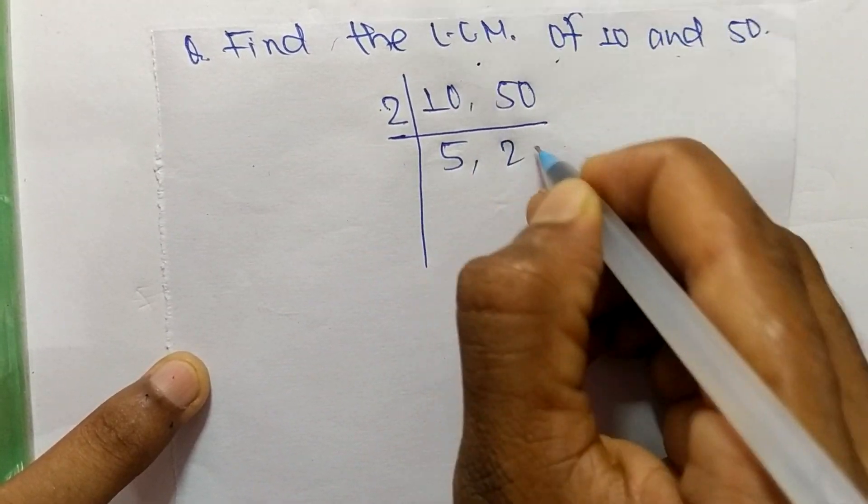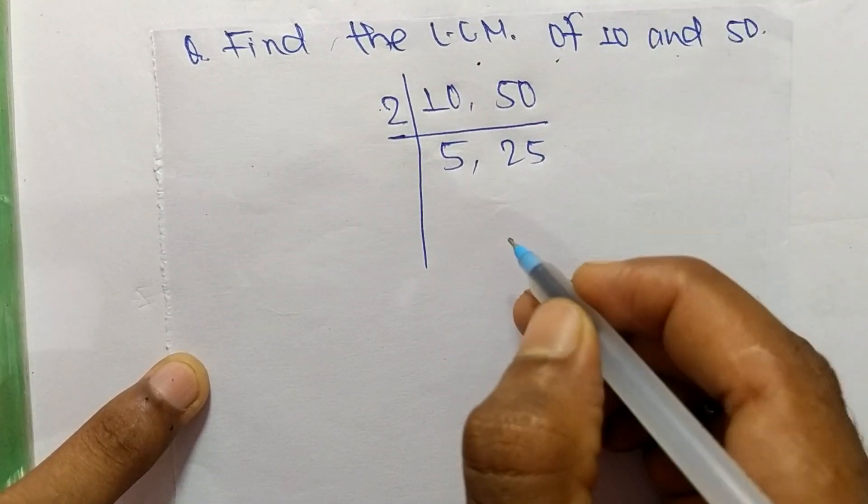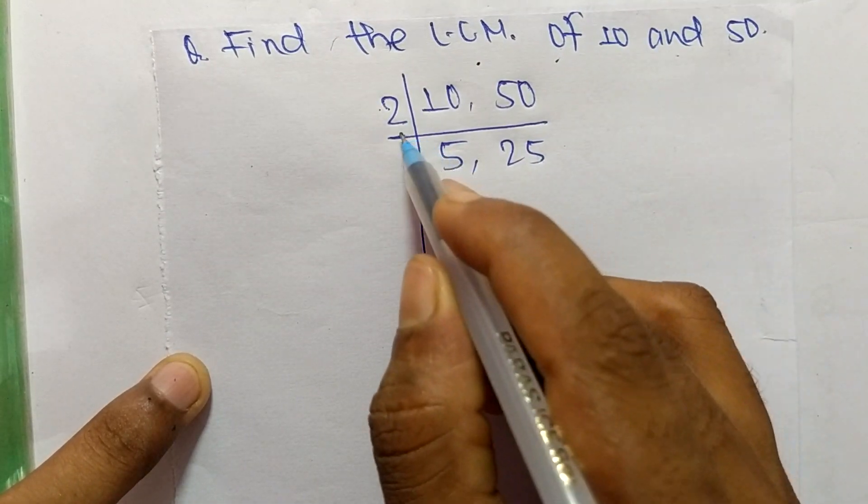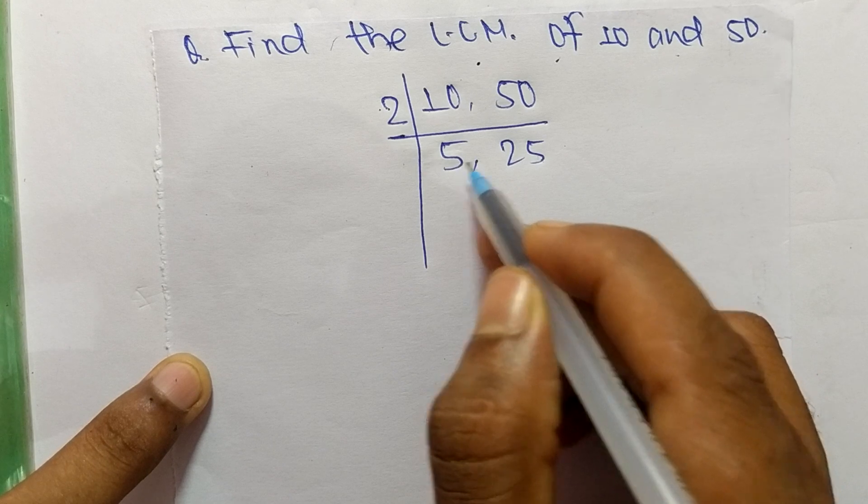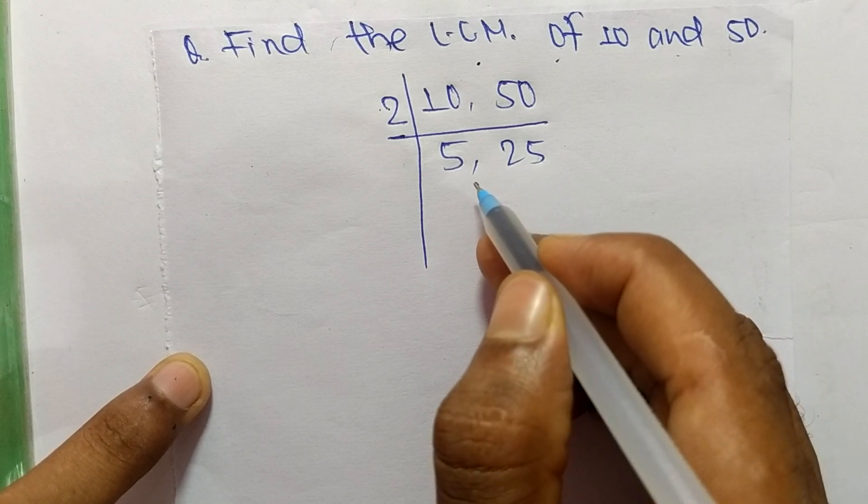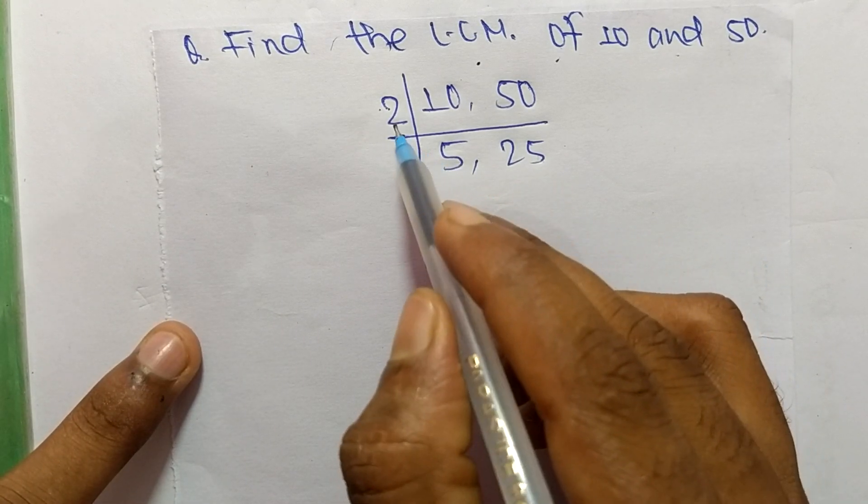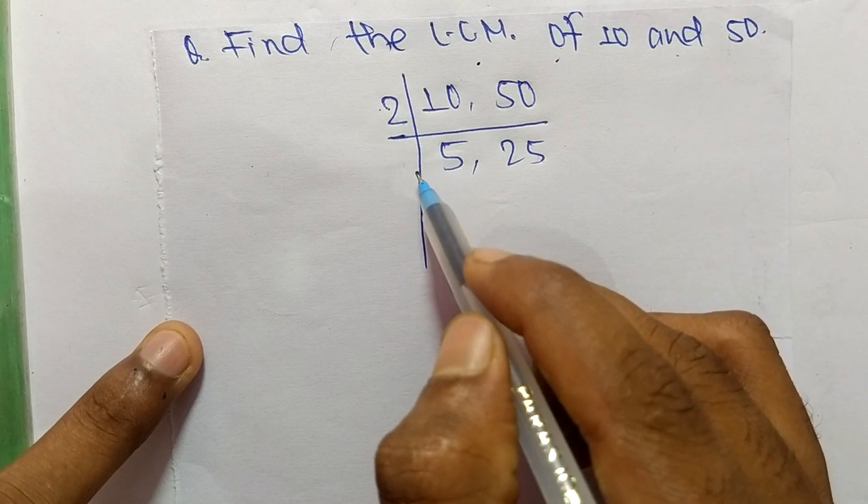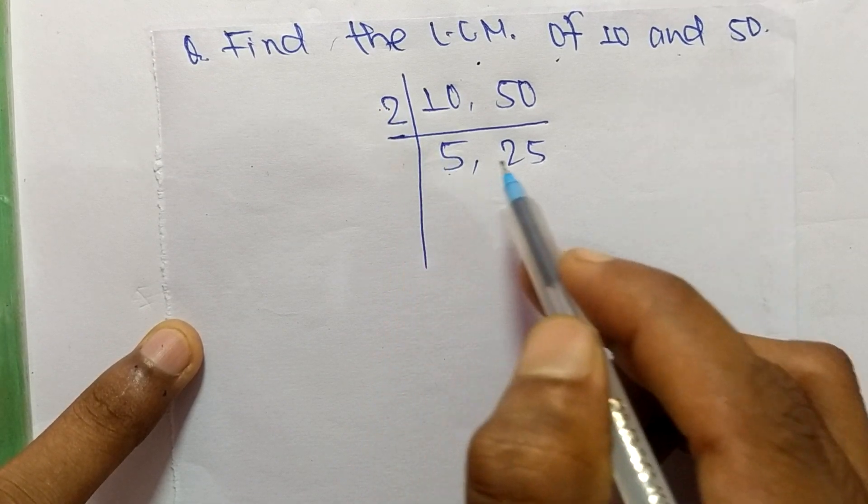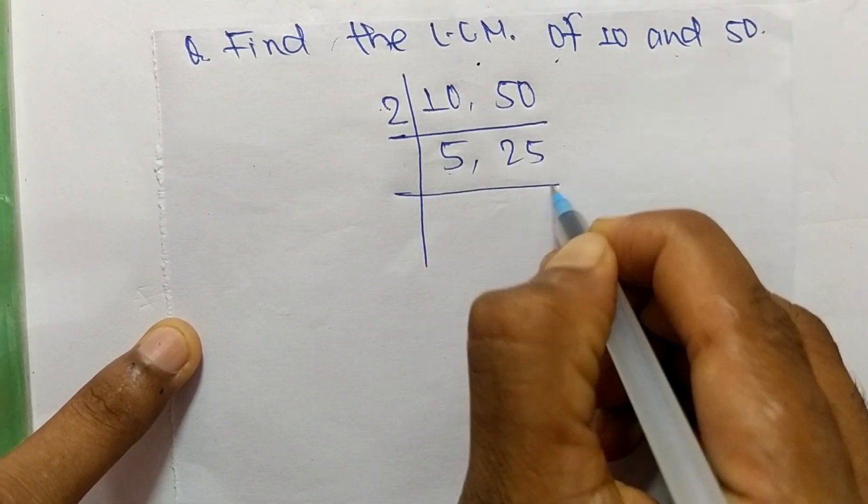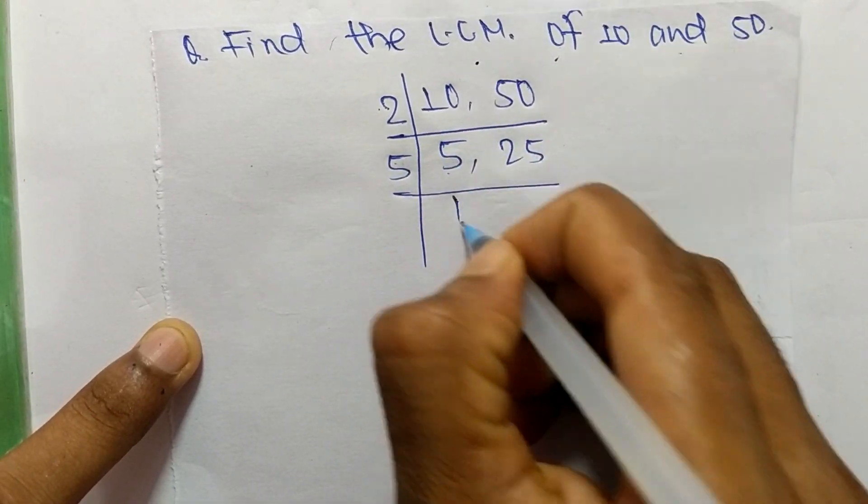Now 2 can't exactly divide 5 and 25, so we choose the number slightly greater than 2 which can exactly divide 5 and 25. We get 5. So 5 times 1 means 5 and 5 times 5 means 25.